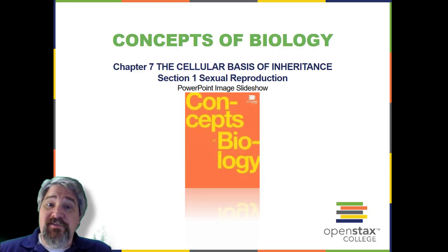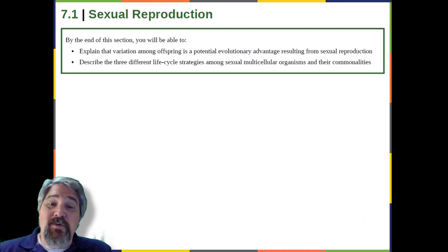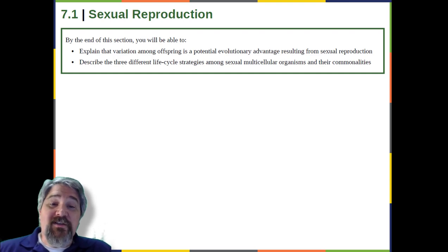Section 1: Sexual Reproduction. By the end of this section, you will be able to describe the three different life-cycle strategies among sexual multicellular organisms and their commonalities.